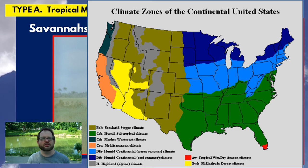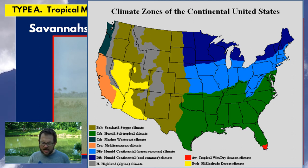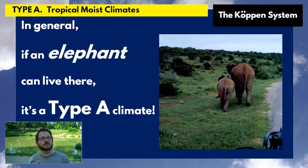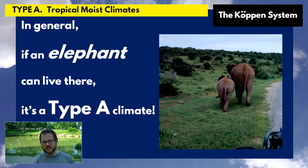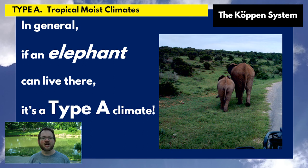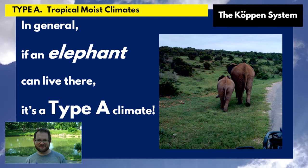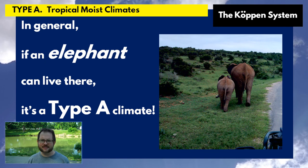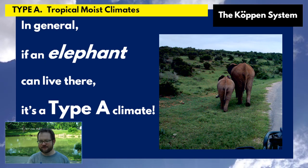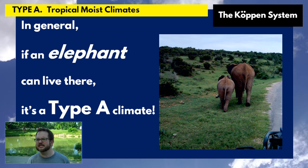Even though the Köppen system is primarily described in terms of plants, here's a good clue for type A: if an elephant can live there, it's probably a type A climate. Jungles, savannas, monsoon regions — if you can picture an elephant living there, it's probably a type A climate.